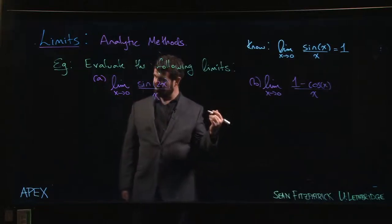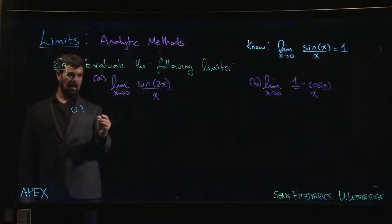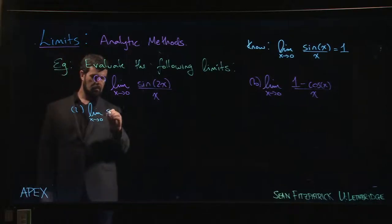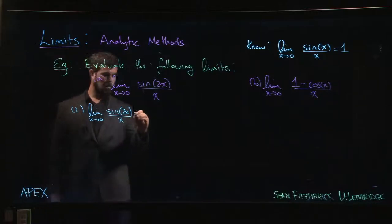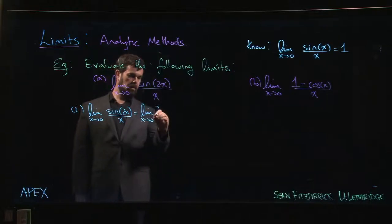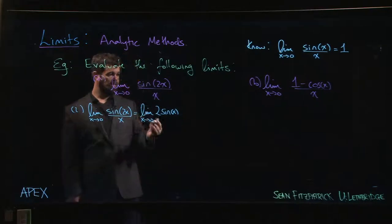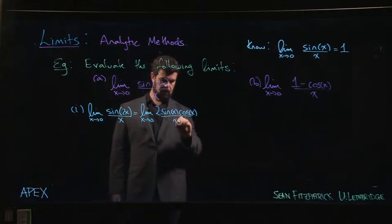So there are two ways that you could do this. One way you can do it is you could use an identity. You could say that the limit as x goes to 0, sine 2x over x is the limit as x goes to 0 of 2. So it's not just 2 sine x, right? This is this double angle formula for sine. It's 2 sine x cos x over x.